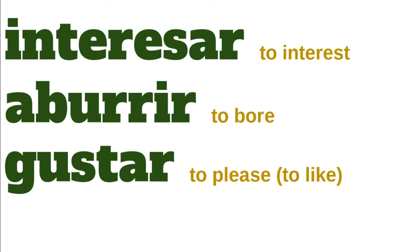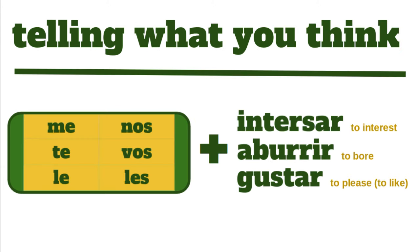So we've looked at three different verbs: interesar, aburrir, and gustar. We use all three in the same way, and we add an N if we're talking about more than one thing that pleases, bores, or interests someone. With all three verbs, we also need to include one of the object pronouns: me, te, le, nos, vos, or les.